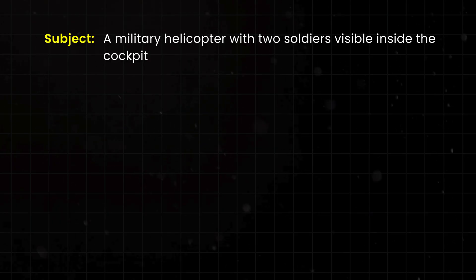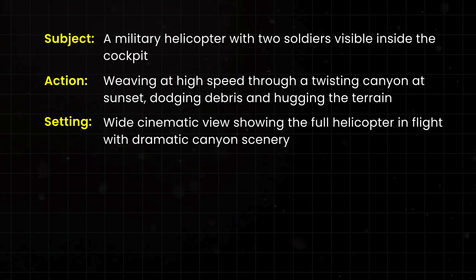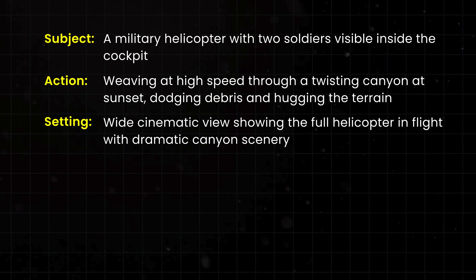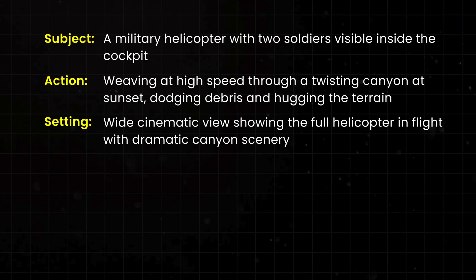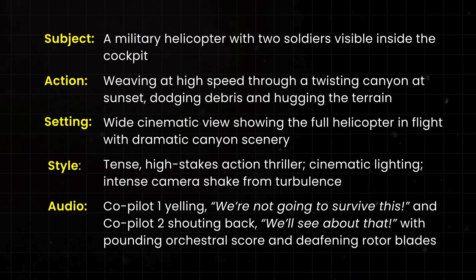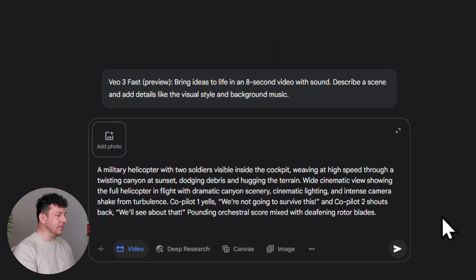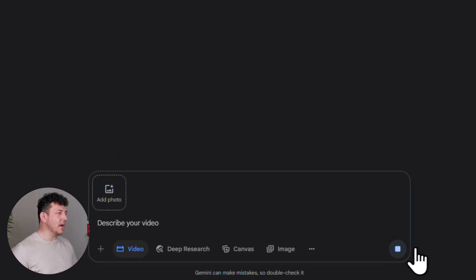Using this simple prompt formula, let's build this scene out step by step. The subject is a military helicopter with two soldiers visible inside the cockpit. For action, we're weaving at high speed through a twisting canyon at sunset, dodging debris and hugging the terrain. The setting is a wide cinematic view showing the full helicopter in flight with dramatic canyon scenery. For style, we want a tense, high-stakes action thriller with cinematic lighting and intense camera shake from the turbulence. And for audio, co-pilot 1 yells 'We're not going to survive this!' and co-pilot 2 shouts back 'We'll see about that!' with a pounding orchestral score and deafening rotor blades. Here's the full prompt exactly as I type it into Gemini — this follows all five parts of the formula so VO3 has everything it needs. Now let's hit submit and give VO3 a couple of seconds.